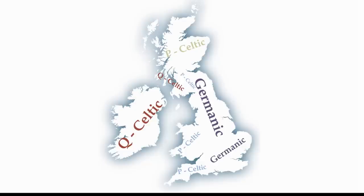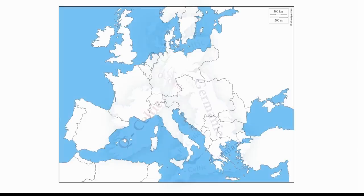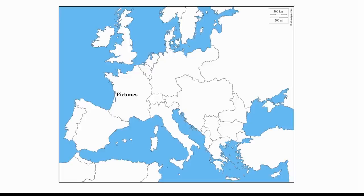Some theories concerning Pictish origins are very far-fetched. One of them links the Gallic Pictones tribe from the French coast to the Picts of modern-day Scotland, claiming they simply sailed up the coast and made landfall in Britain. Another theory suggests that the Picts came from Scythia — the region around the Black Sea.